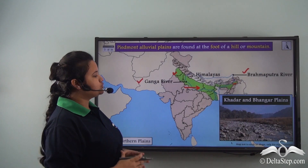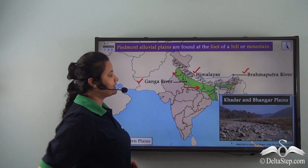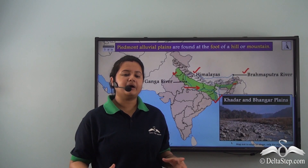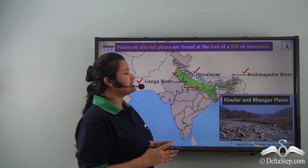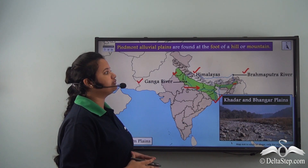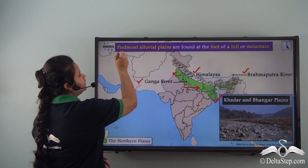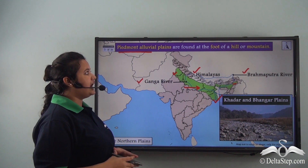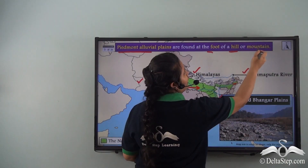The northern plains are situated at the foothills of the Himalayas. Here we have a picture of Khadar and Bhangar plains, which are part of the northern plains situated at the foothills of the Himalayas. These mountains are called Piedmont alluvial plains. Thus Piedmont alluvial plains are found at the foot of a hill or a mountain.